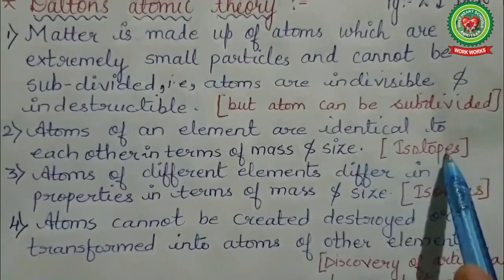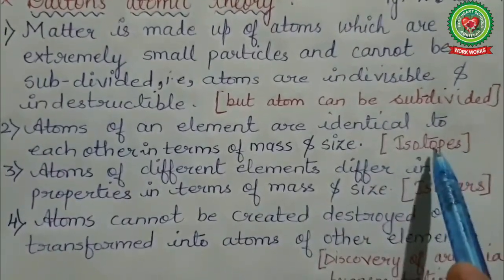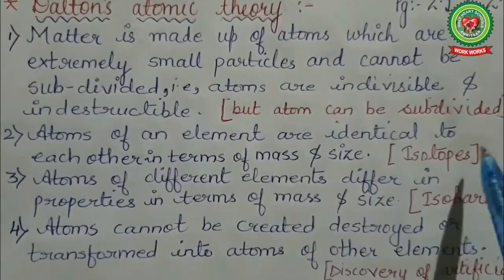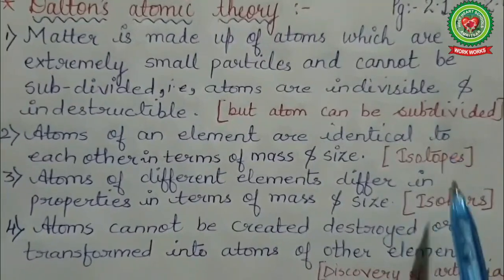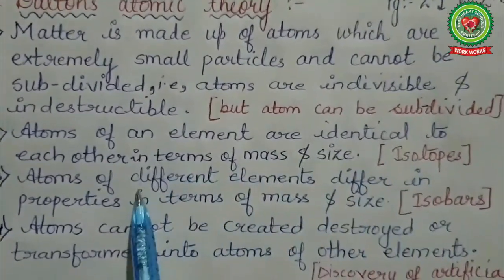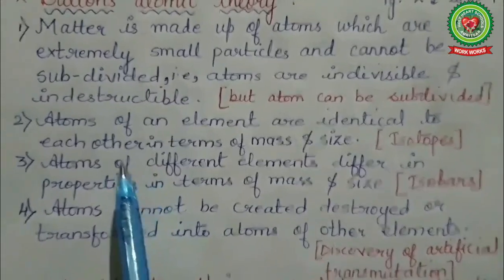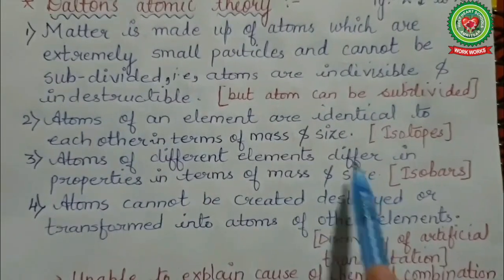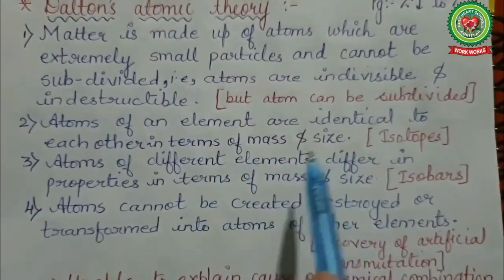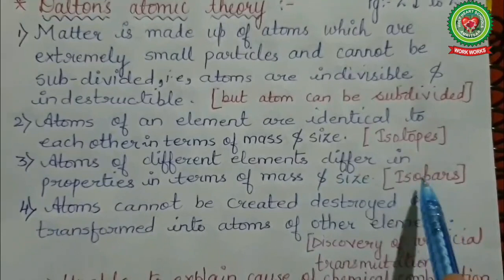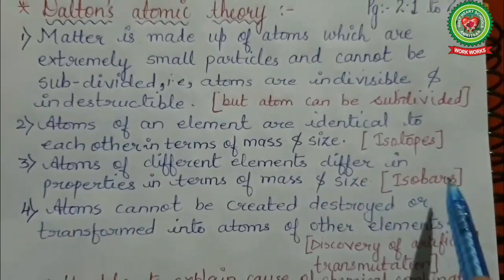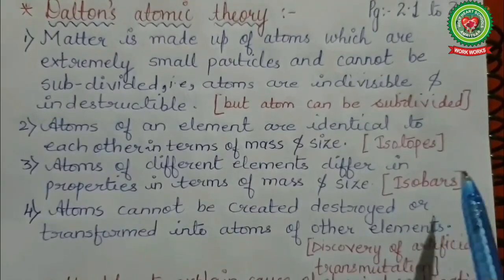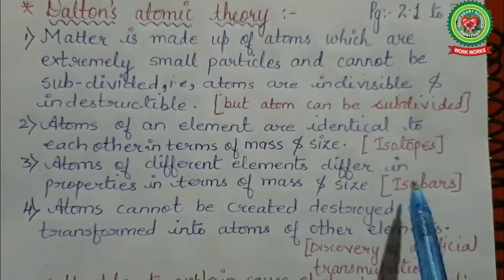We now know of isotopes — isotopes are the same element having the same atomic number but different mass number, so the mass number changes. The third postulate was that atoms of different elements differ in mass and size. But we know about isobars — different elements having the same mass number but different atomic number, so their chemical properties will be different.